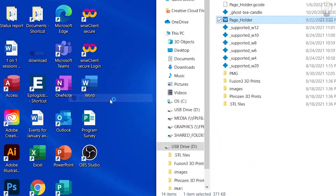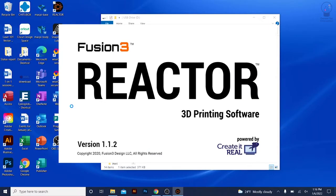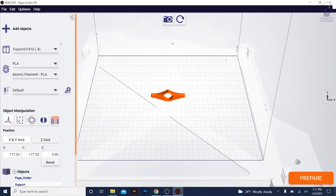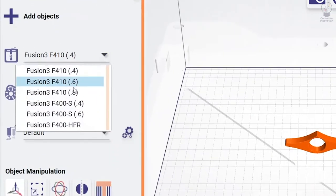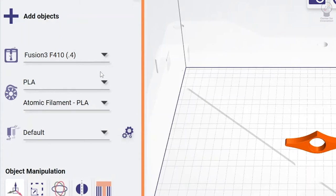open the file you want to print with the Reactor application on one of our computers. The correct printer should already be selected, but you may need to adjust the filament settings depending on what type of filament you are using.